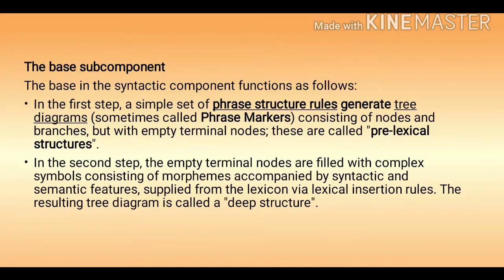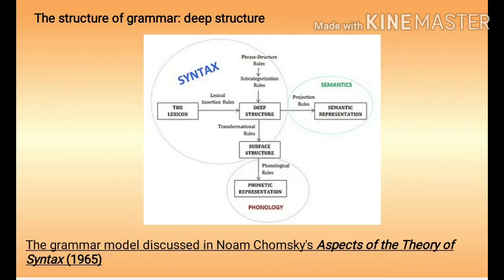The base subcomponent functions as follows: in the first step, a simple set of phrase structure rules generates tree diagrams — sometimes called phrase markers — consisting of nodes and branches but with empty terminal nodes. These are called pre-lexical structures. In the second step, the empty terminal nodes are filled with complex symbols consisting of morphemes accompanied by syntactic and semantic features supplied from the lexicon via lexical insertion rules. The resulting tree diagram is called a deep structure.